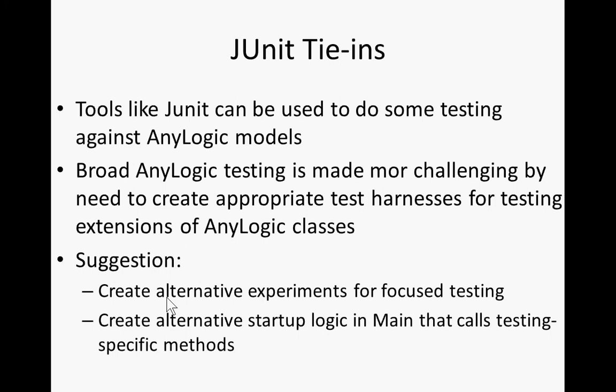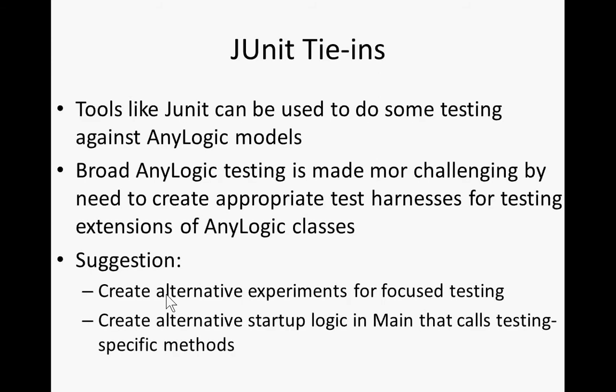You can create alternative startup logic in Main that calls testing-specific methods. There may be a model in the example models that uses JUnit as part of it. The idea is to put a model through its paces, or at least some paces, to make sure it's operating okay. Often a model will have many moving parts, and it's unfortunate if we have to test all those parts together — just throw them together and get them to run, which is unfortunately the common practice. If there's a way to test things independently, it's desirable. Even a few basic tests with a very small population can be very valuable.